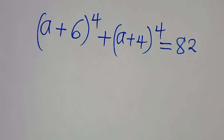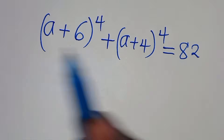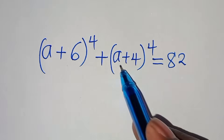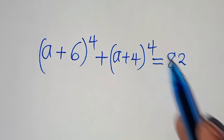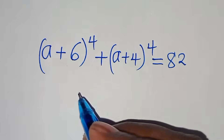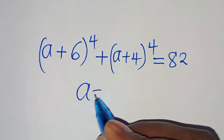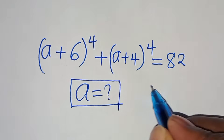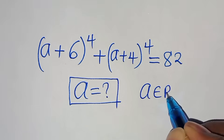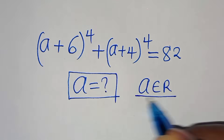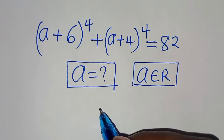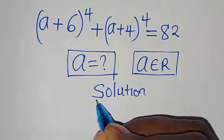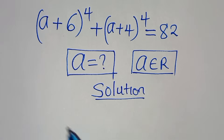Welcome. We're going to solve this algebra problem: (a + 6) to the power of 4 plus (a + 4) to the power of 4 equals 82. What is the value of a, given that a is a member of the real numbers? Let's provide a solution.